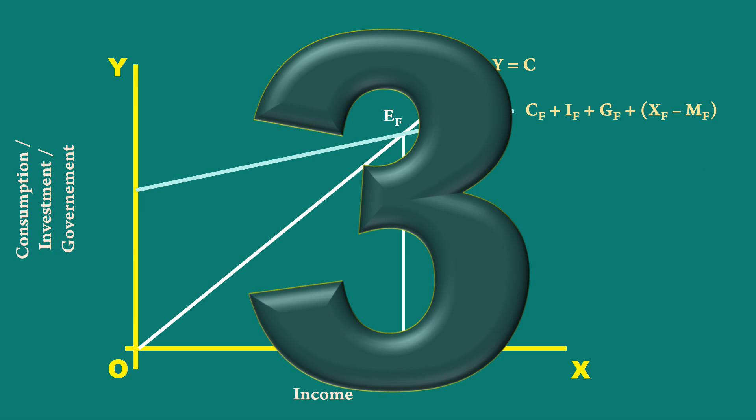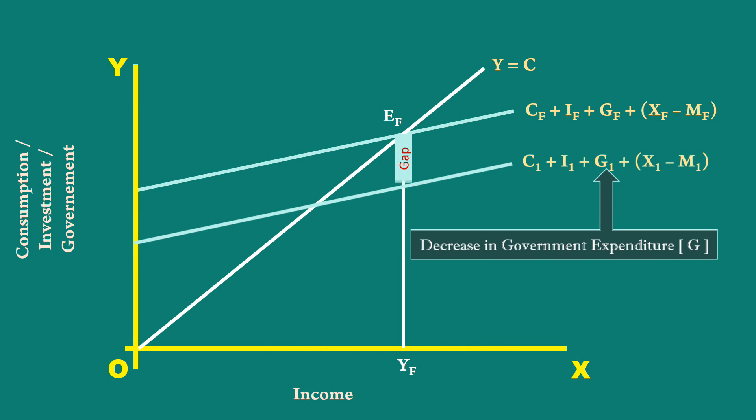3. If the government spends less, the curve will move down. It will create a gap between aggregate demand and aggregate supply.